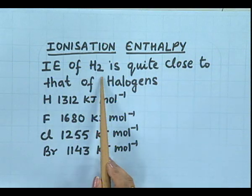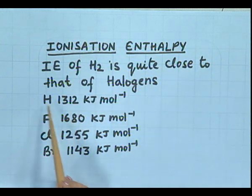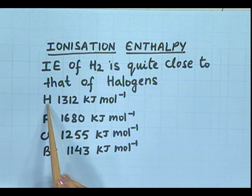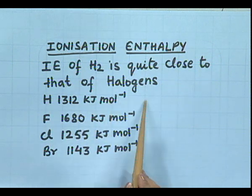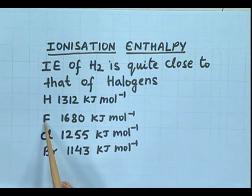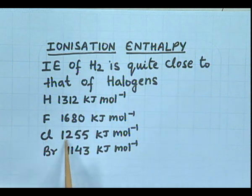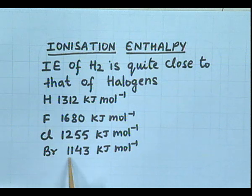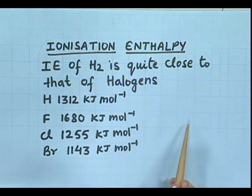Ionization enthalpy: the ionization enthalpy of hydrogen is quite close to that of halogens. Hydrogen's ionization enthalpy is 1312 kJ/mol, fluorine's is 1680 kJ/mol, chlorine's is 1255 kJ/mol, and bromine's is 1143 kJ/mol. All these values are quite comparable.